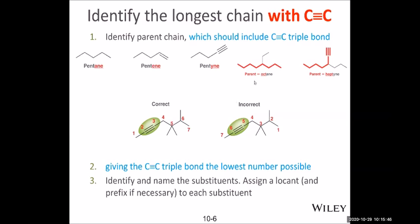The triple bond has high priority — just like in alkene naming, we keep the double bond as the parent chain. For example, even though there may be a longer carbon chain, the parent chain must have the triple bond. We keep the triple bond at the lowest locant, so we number starting from the end that gives the triple bond the lowest number: one, two, three, four, five, six, seven carbons — so it's a heptyne.